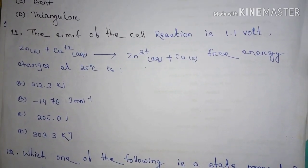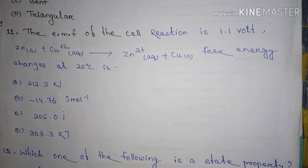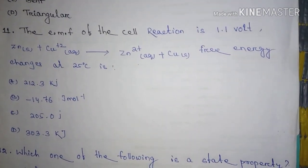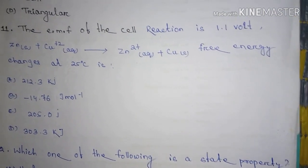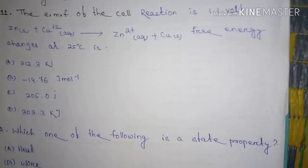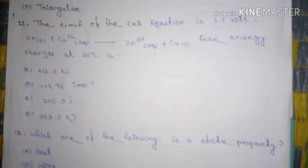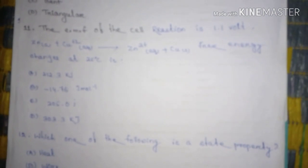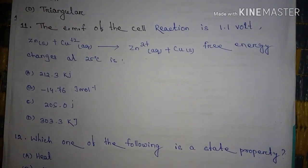Question number 11, the EMF of the cell reaction is 1.1 volt and the reaction is Zn solid plus Cu plus 2 aqueous gives Zn 2 plus aqueous plus copper solid. Free energy changes at 25 degree centigrade, the answer is minus 212.3 kilojoule, answer is A.